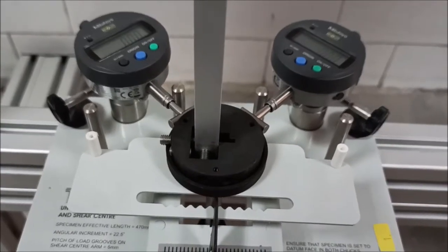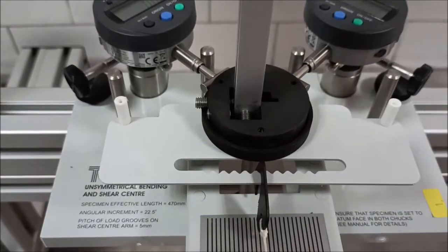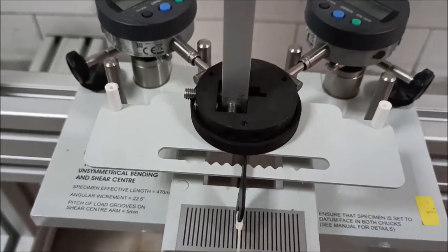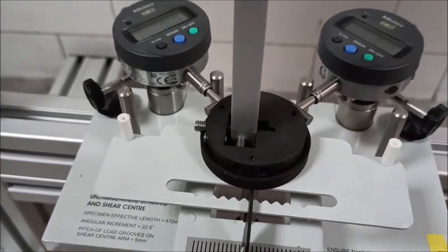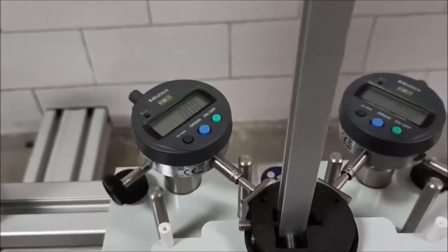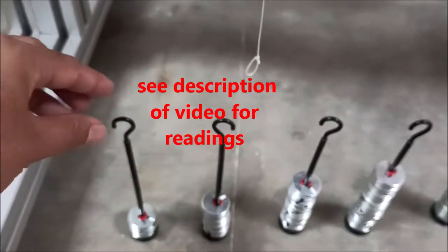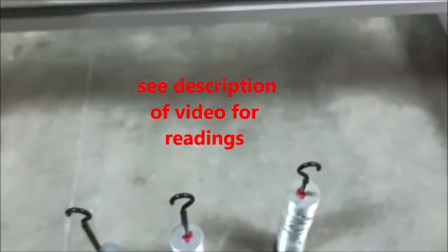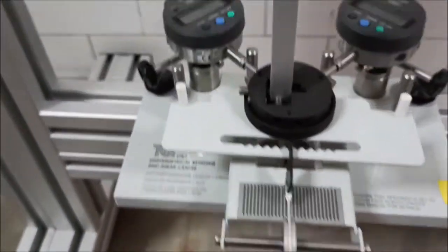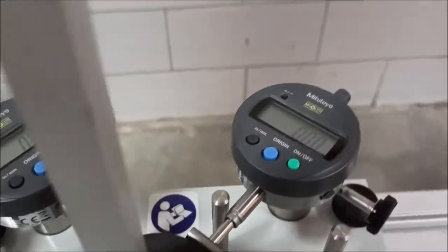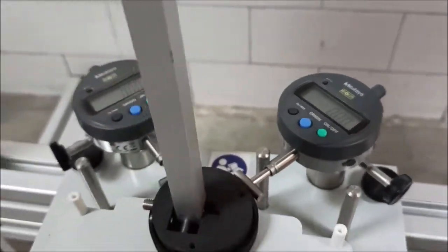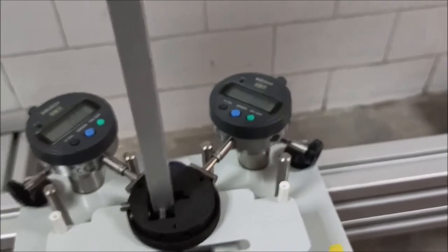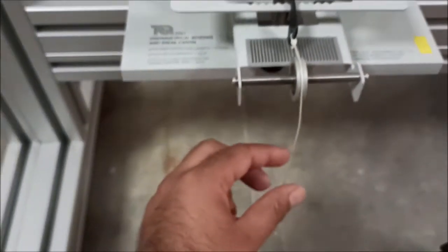We can rotate it by 22.5 degrees which is the angular increment. Apart from theoretical calculation, for the experiment we need different weights: 100 grams, 200 grams, 300 grams, 400 and 500 grams. When we initially set the reading to zero in left and right indicators, we will apply the initial load.